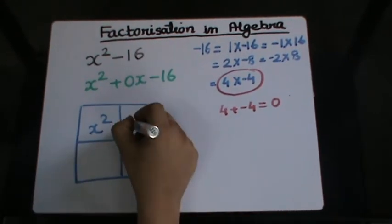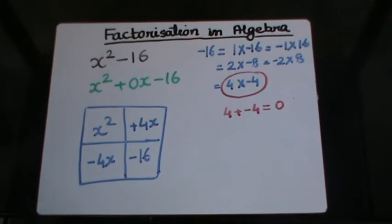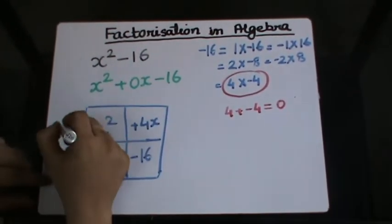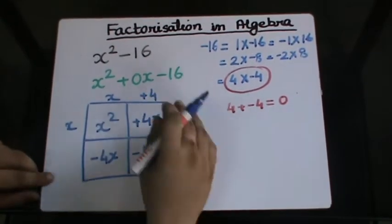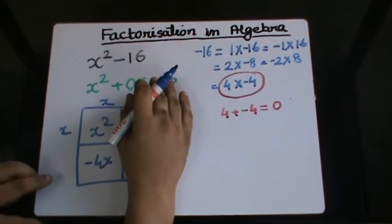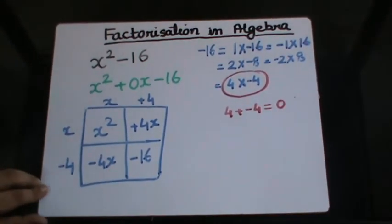I'll write +4x here and -4x here. Now between these two I have x common, so I'll write x + 4. Between these two I have -4 common, so I'll be left with -4.